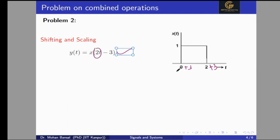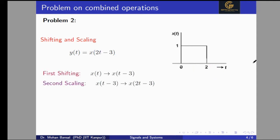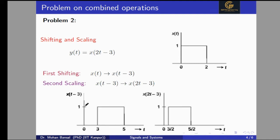Now we apply scaling by two — we divide all values by two. After applying the precedence rule, we first shift the signal to get start at three and end at five, then scale. Dividing by two: the signal starts at 1.5 and ends at 2.5. After applying the scaling, the signal will start at three divided by two and end at five divided by two — that is, 1.5 to 2.5. The width is reduced by a factor of two: previously width was two, now it is one. We don't apply any reversal because t is positive.